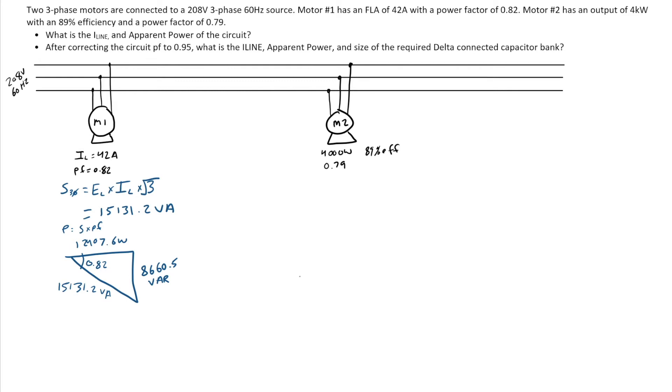So what I'm going to do is on motor two, I'll switch to red here. In order to get my power input, I'm going to go power output divided by my efficiency. So in this case, 4,000 watts divided by 0.89 or 89%. That gives me an input to the motor of 4,494.4 watts.